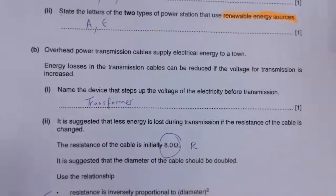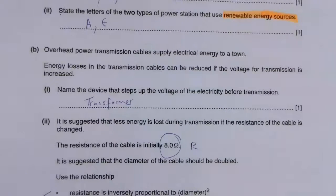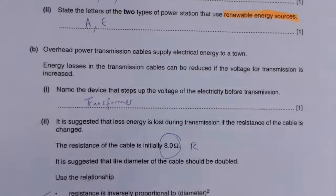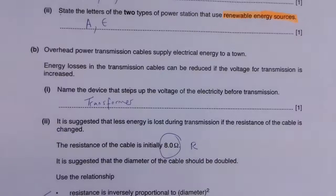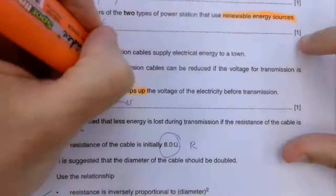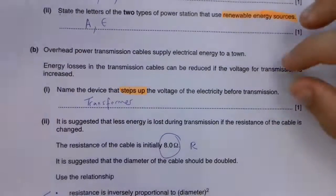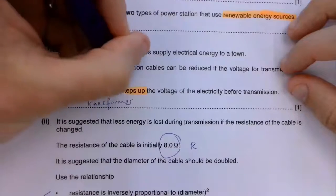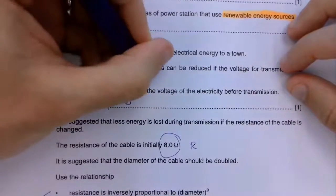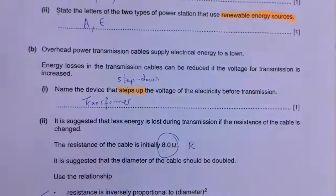Then we talked about overhead power transmission, which is supplying electrical energy. The energy losses in the transmission cables can be reduced if the voltage is increased. The device that steps up the voltage is called a transformer. And there are two types of transformer, step up and step down. Step up increases voltage, step down decreases it.